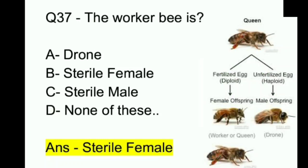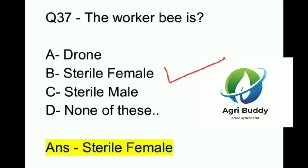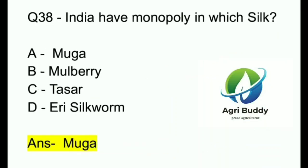Question 37. The worker bee is? A. Drone. B. Sterile female. C. Sterile male. D. None of these. And the answer is Sterile female.